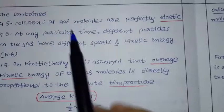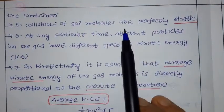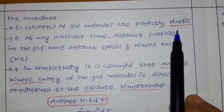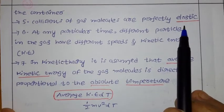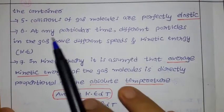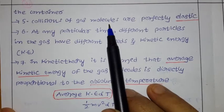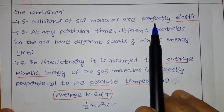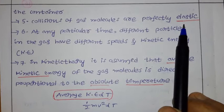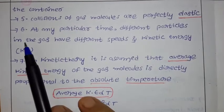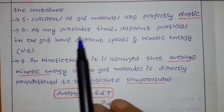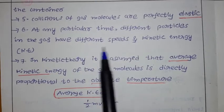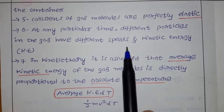The fifth postulate is: collisions of gas molecules are perfectly elastic. This means there is no loss of energy due to collision. Because of these collisions, the gas particles are not going to lose any energy — such collisions are called perfectly elastic in nature.